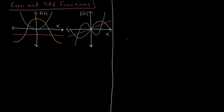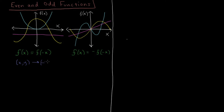Let's write this down and clarify. We have f(x) = f(-x): going to the opposite side of the y-axis gives the same point. And f(x) = -f(-x): going to the opposite side of the y-axis gives the opposite y-value. If you have a point (x, y) on the function, then (-x, y) is also on it. For the other case, if (x, y) is on the function, then (-x, -y) is also on it. These points are reflected across the y-axis — symmetric with respect to the y-axis.